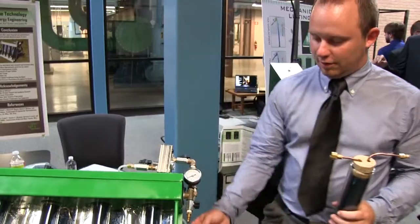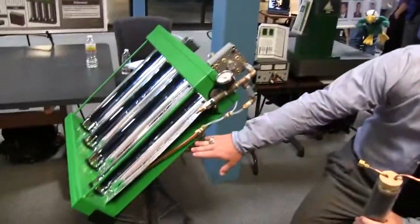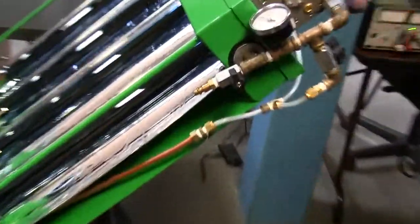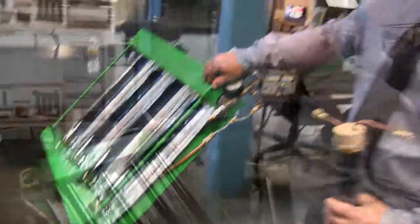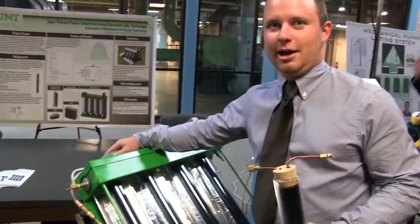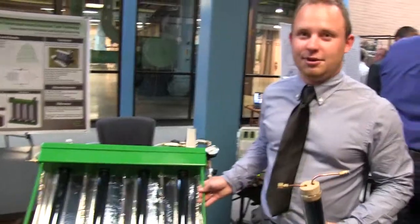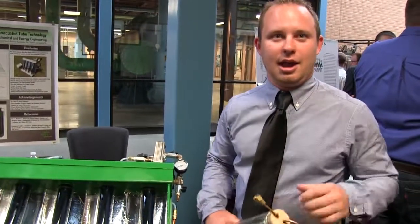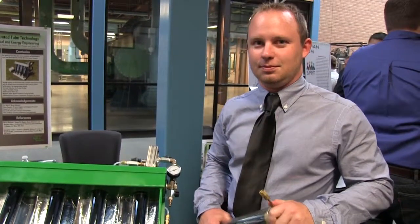As it exited the turbine, it ran into a condenser. It runs right through there in the back. And then it would leave the condenser, complete the cycle back into the pump. We achieved about 55% efficiency and 14 watts.